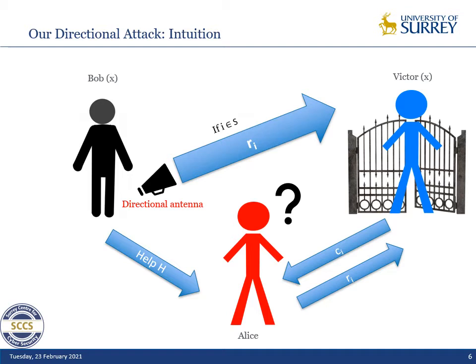The strategy goes as follows. Bob gives some help H to Alice, and we divide the rounds into two sets. We have a set S for which Bob will send his own response through the directional antenna in such a way that it overwrites Alice's responses. For the rest of the rounds, Alice will send a response that will be accepted by Victor. The key point is how to define this help vector and this set S.